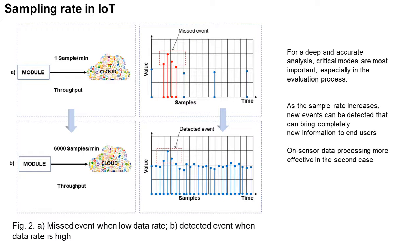The modern trend is increasing sampling frequency. For deep and accurate analysis, critical modes are most important, especially in the evaluation process. As the sample rate increases, new events can be detected that can bring completely new information to end users. On-sensor data processing is more effective in this case.